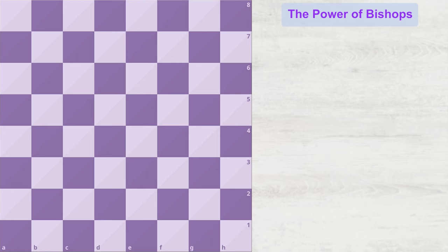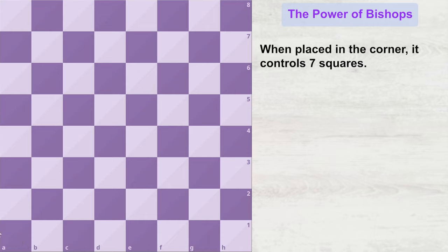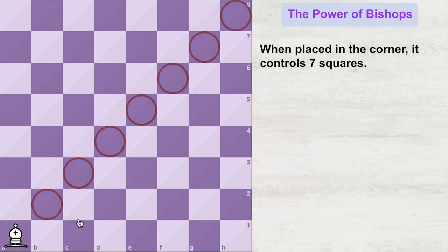Now let's understand the power of a bishop when it's placed on different squares of the chess board. When a bishop is placed on the corner of the board, it can control seven squares.